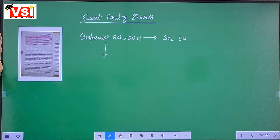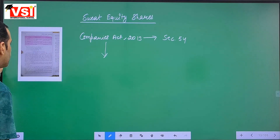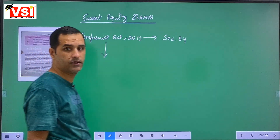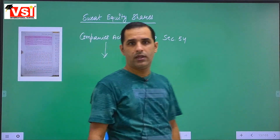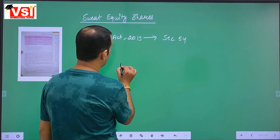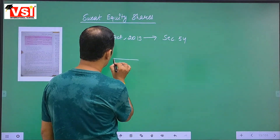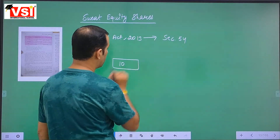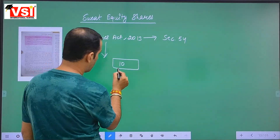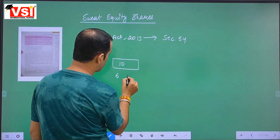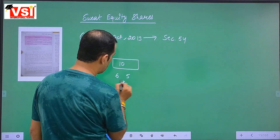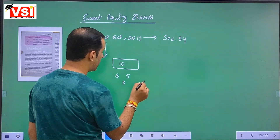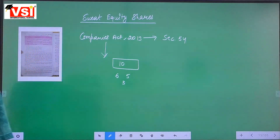It is to be noted that a company can issue sweat equity shares at a price lower than the nominal value of the equity share. For example, if the face value of a share is 10 rupees, the company can issue it at 6 rupees, 5 rupees, or even 3 rupees per share — it is allowed.